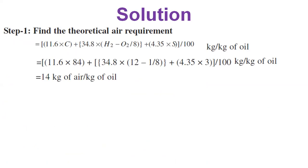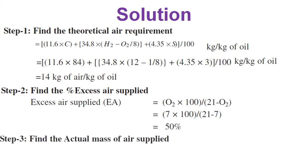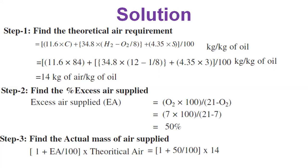Step 2: excess air supplied = (7 × 100) / (21 − 7) = 50%. Step 3: actual mass of air supplied = (1 + 50/100) × 14 = 1.5 × 14 = 21 kg of air per kg of oil. We then proceed to estimate all other losses.